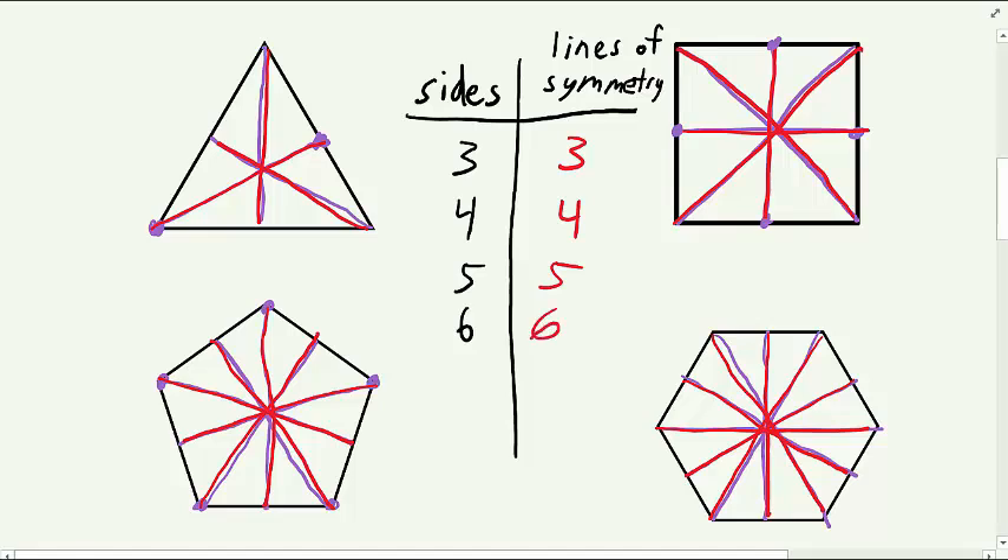To generalize that idea, if a regular polygon has n sides, then it has n lines of symmetry.